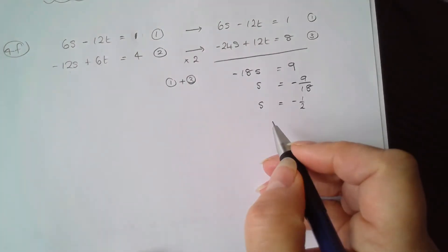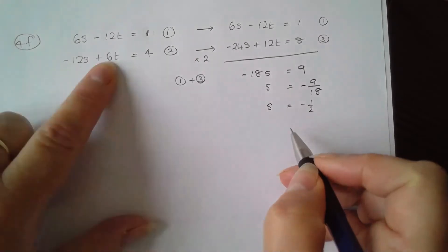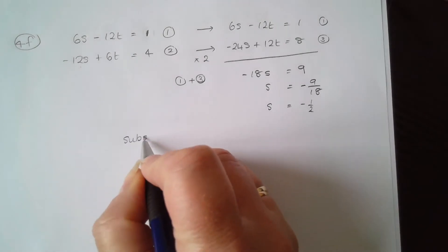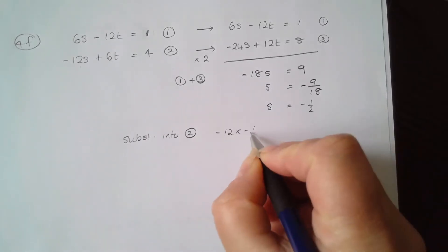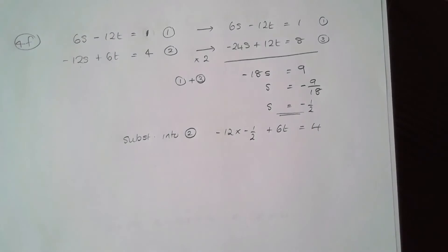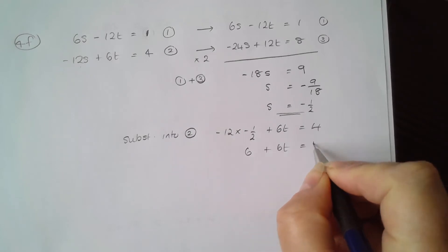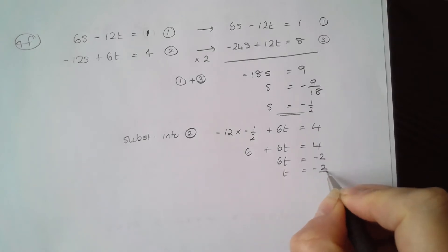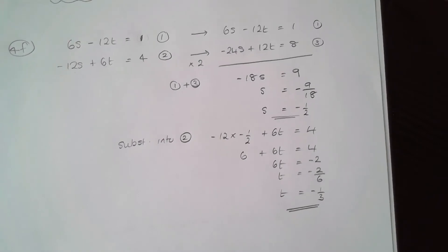Substituting back into equation 2 to find t: negative 12 times negative one half plus 6t equals 4. Negative 12 times negative one half is plus 6, so 6 plus 6t equals 4, which means 6t equals negative 2, and t equals negative 2 sixths, which simplifies to negative one third. Not a very nice answer for that one.